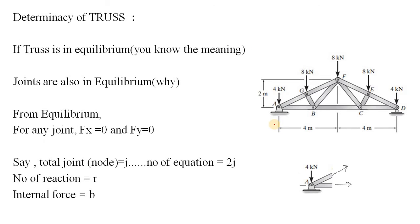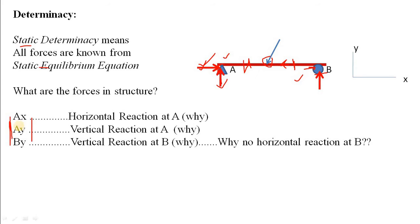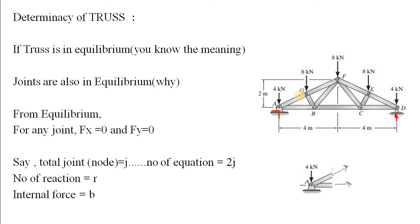We determine these unknowns from equilibrium equations. First, check external determinacy: the vertical roller reaction, the vertical pin reaction, and the horizontal pin reaction give 3 unknowns. With 3 equilibrium equations, we can solve for all 3 unknowns, so the truss is externally determinate. Now we need to check internal determinacy.